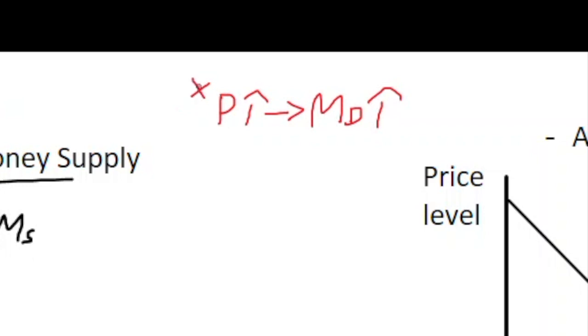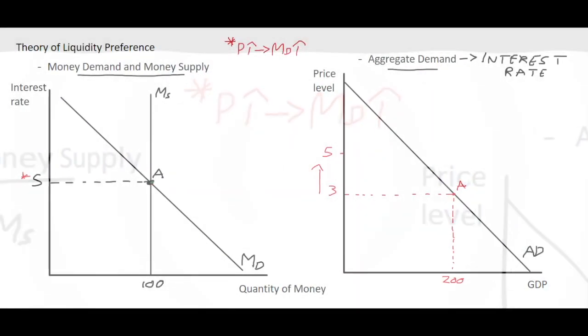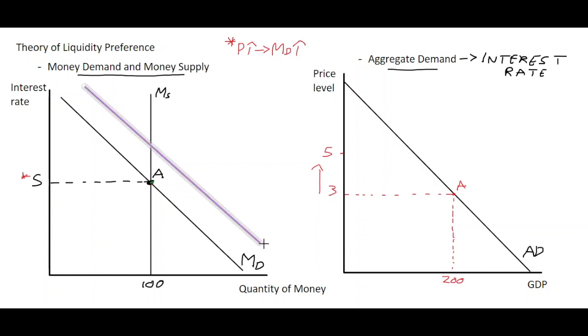So when prices go up, money demand goes up as well. When money demand increases, what we say is that the money demand curve shifts rightwards. So we can show this on our money market diagram over here on the left-hand side.